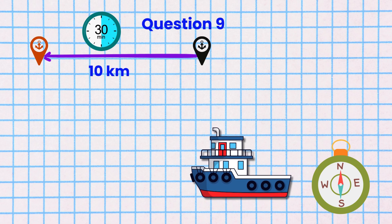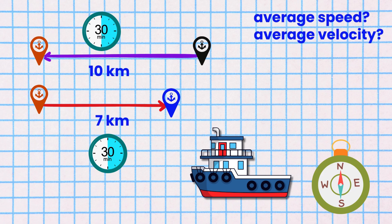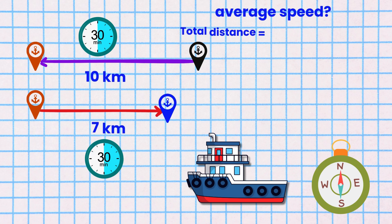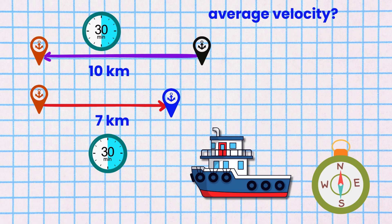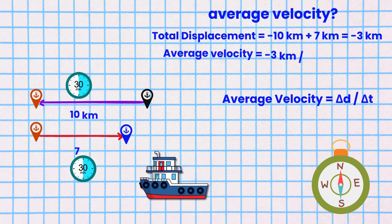Question 9. The boat travels 10 kilometers west for half an hour and then turns around and travels 7 kilometers east for half an hour. What is the boat's average speed and average velocity? Total distance is 17 kilometers. Total time is 1 hour. Average speed is 17 kilometers divided by 1 hour, which equals 17 kilometers per hour. Average velocity is total displacement divided by total time. The total displacement is negative 10 kilometers plus 7 kilometers, which equals negative 3 kilometers. So the average velocity is negative 3 kilometers divided by 1 hour, which equals negative 3 kilometers per hour.